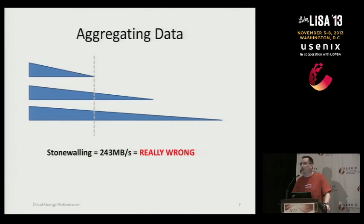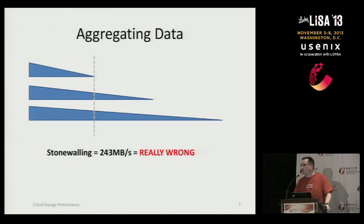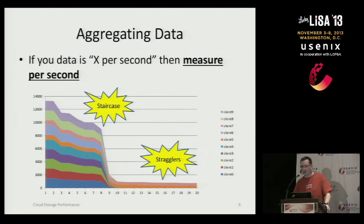I'm really not a fan of the stonewalling approach. You should actually do all of the I/O that was requested and measure the results for the entire run. And you don't just take an average across that entire time — you actually want to see the complete distribution of what happened during that run.